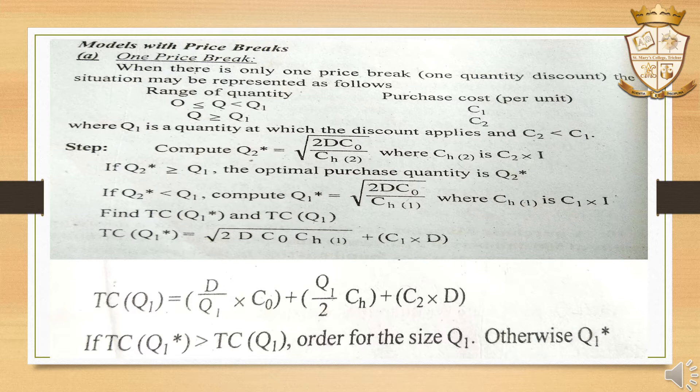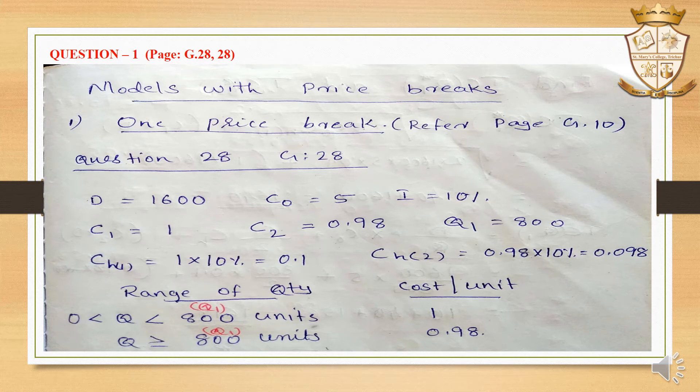Otherwise, if TC(Q1 star) is less than TC(Q1), we compare again. Let's take an example for one price break — question number 28, page number G28. The annual demand for a product is 1600 units, so D = 1600. The cost of placing an order is CO = 5.